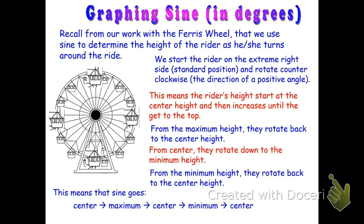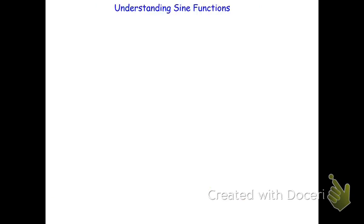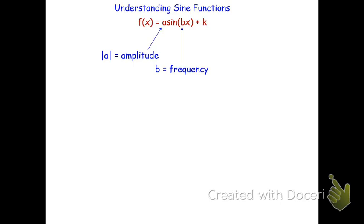When we graph a sine function, we go center, max, center, min, and back to center — that's one complete cycle for sine. For the function notation, f(x) = a·sin(bx) + k is the general form for sine, where a is the amplitude, b is the frequency, and k is the vertical shift. Some books may use a different letter for vertical shift; we use k because that's what we used for all function notations when doing transformations.